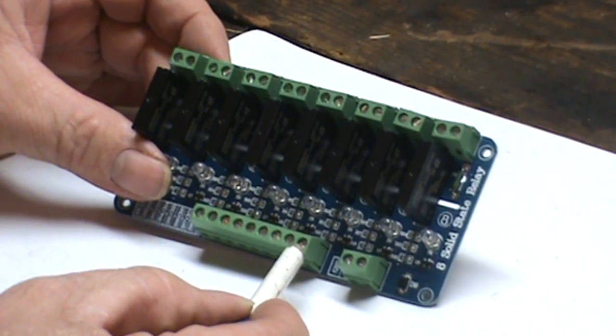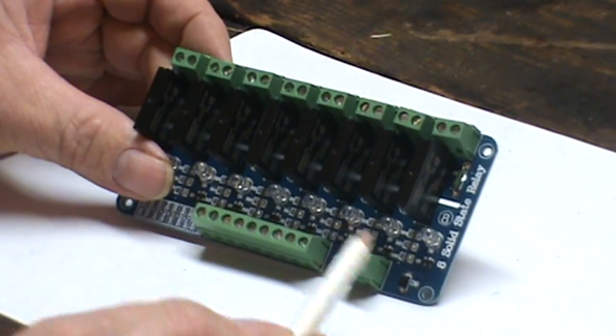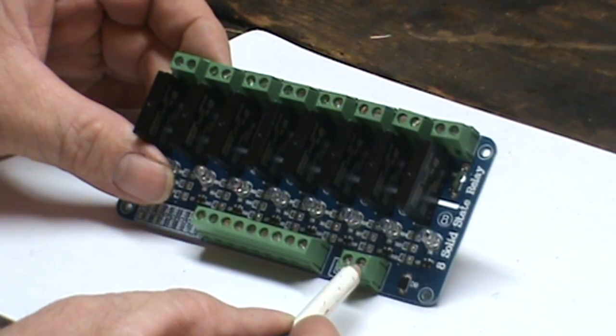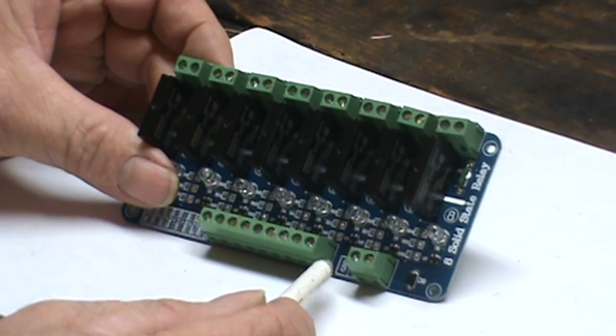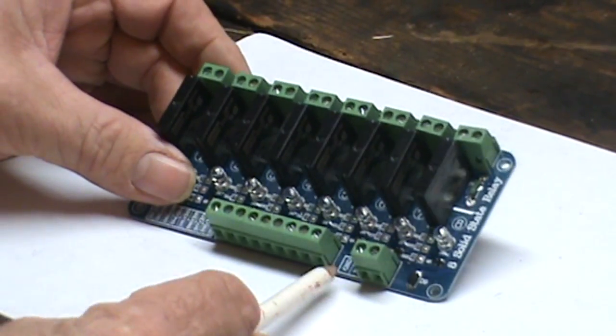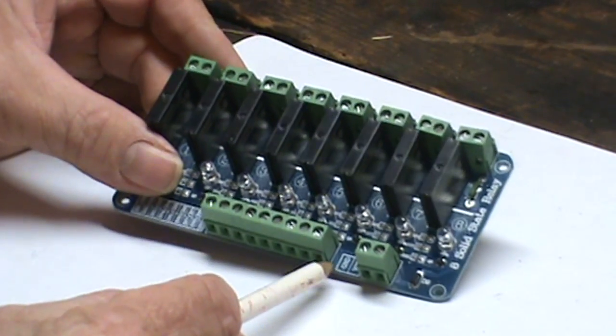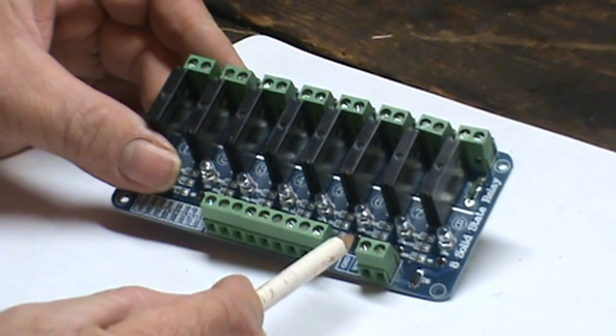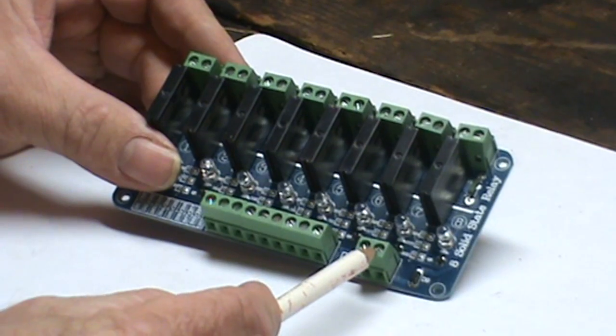The connectors right here go to your Arduino board. The two at the end right here are your ground and voltage. They're labeled clearly on the board right here: GND for the ground and VCC for the voltage.